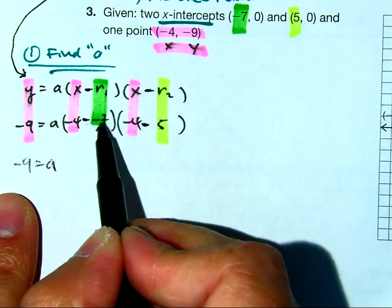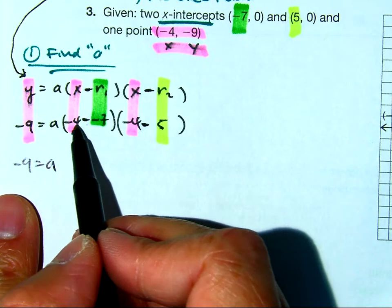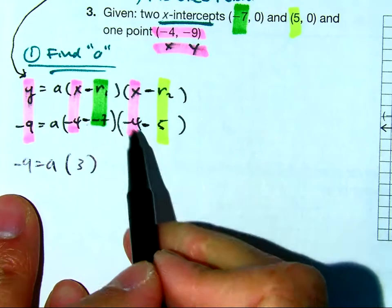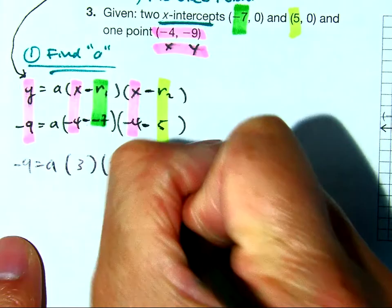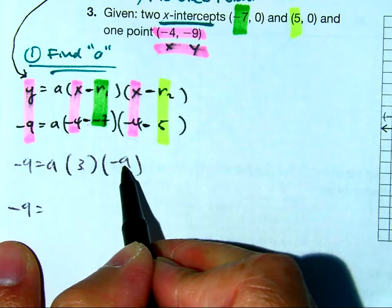Class, what's the opposite of negative 7? So, what's -4 plus 7? 3. Negative 4 minus 5? So, I have -9 equals 3 times -9 times a.